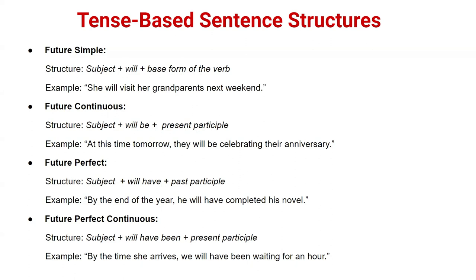Future continuous structure: subject + will be + present participle (verb+ing). In future continuous, we use 'will be' and add 'ing' to the verb. For example: 'At this time tomorrow, they will be celebrating their anniversary' — 'will be' is used with 'celebrating' (celebrate + ing).